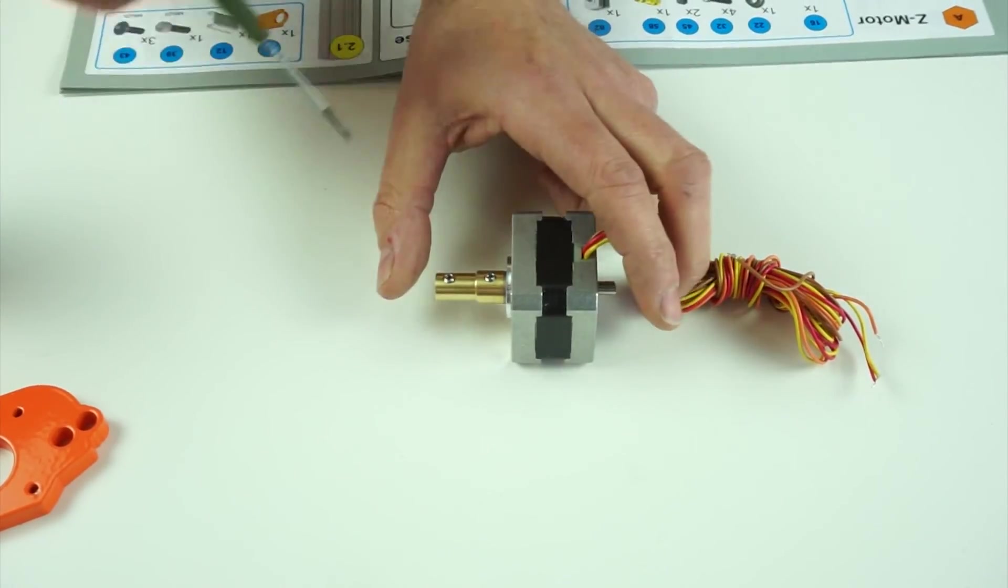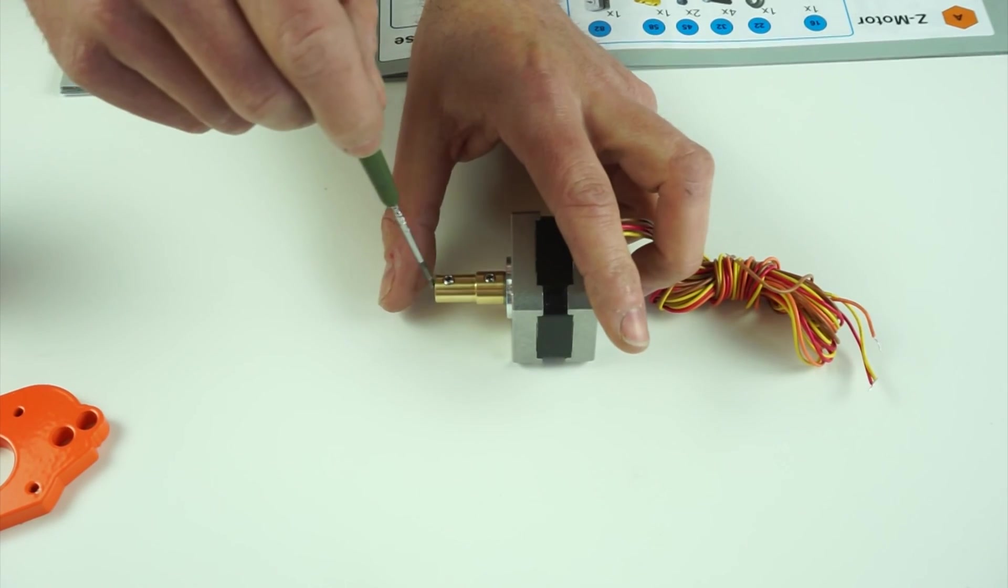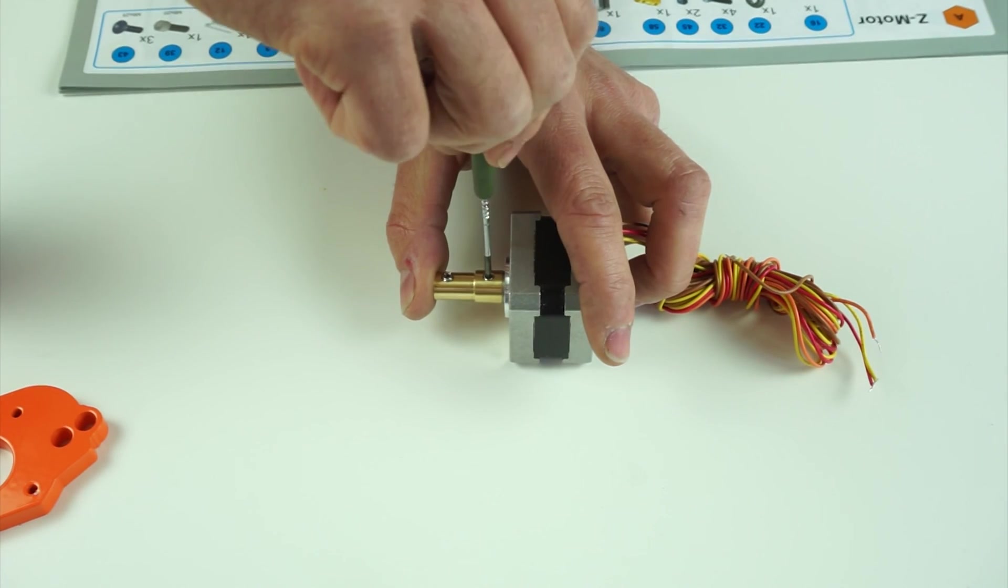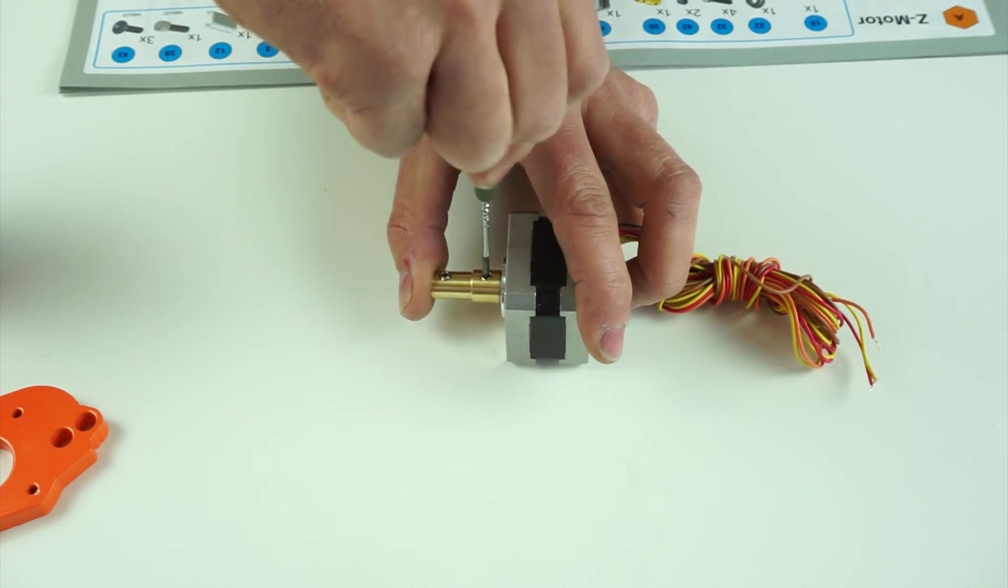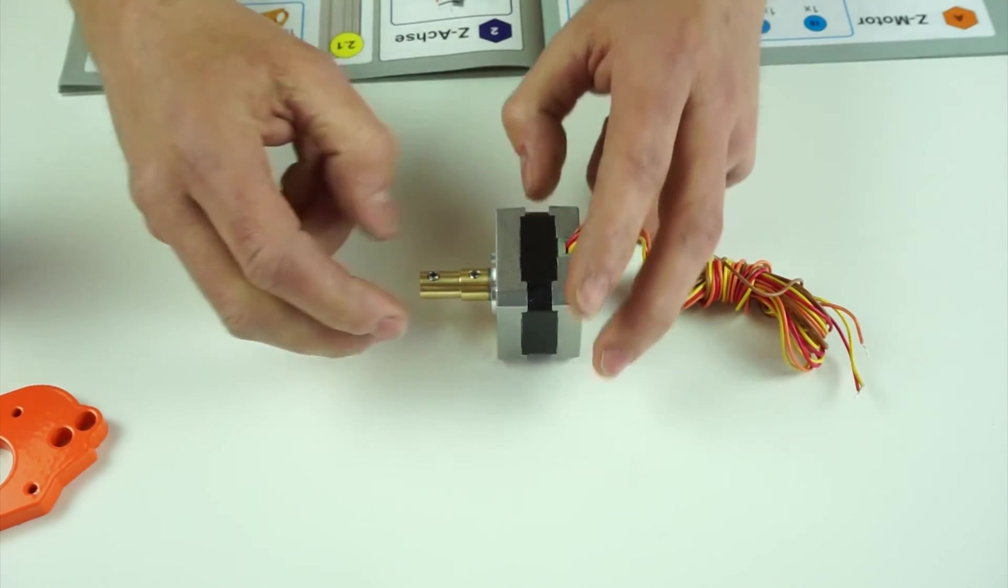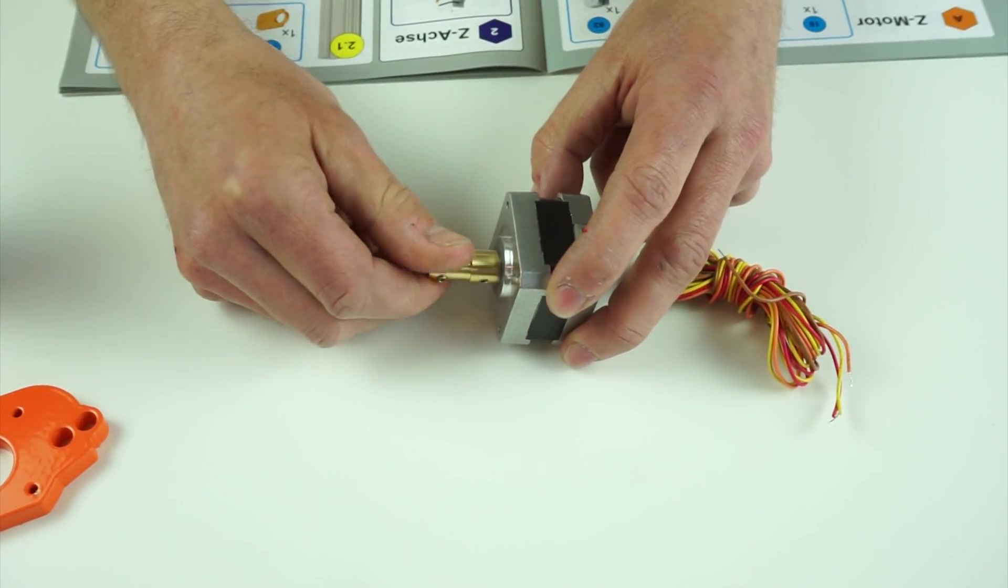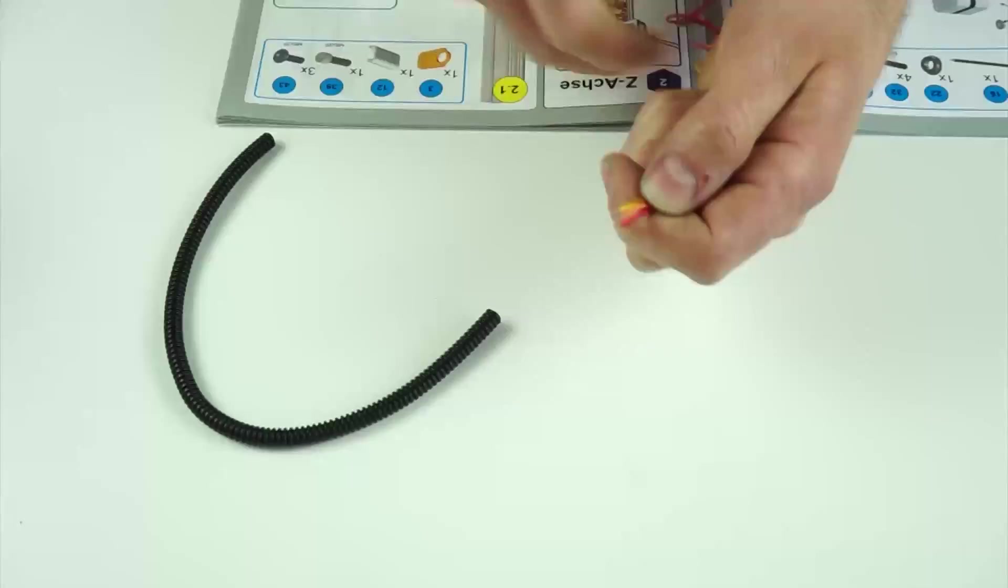As you tighten the screws, place pressure on the end of the connector to ensure it's tight against the axial bearing. When finished, it should spin smoothly.